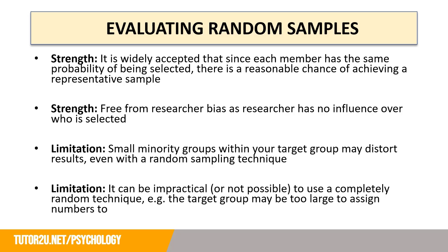For each sampling technique you also need to be able to evaluate them — that is, pulling out the strengths and the limitations. A first strength of random sampling is that since each member has the same probability of being selected, whether you're using a random number generator or pulling names out of a hat, everyone has an equal chance, so there's a reasonable chance of achieving a representative sample. A second strength is that it's free from researcher bias, because the researcher has no influence whatsoever over who is selected.